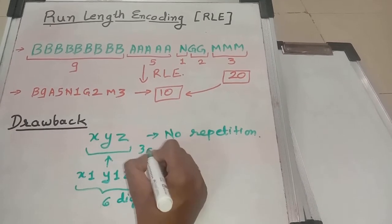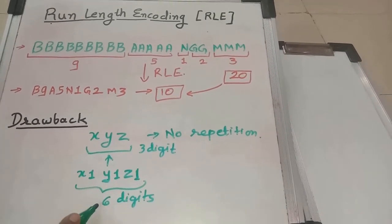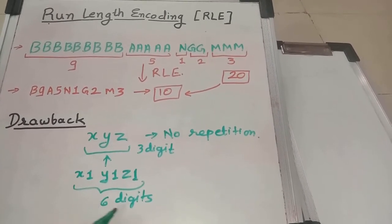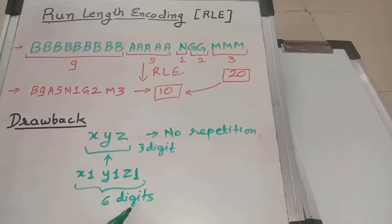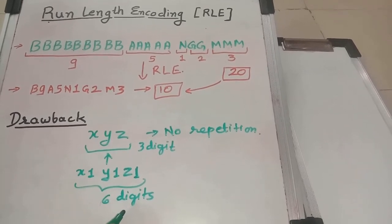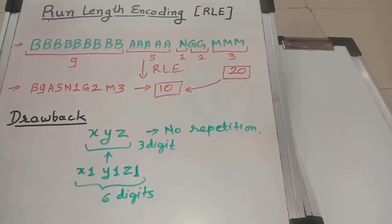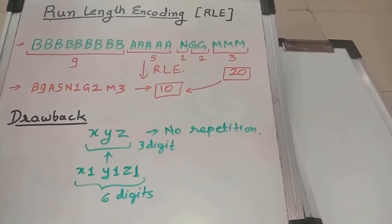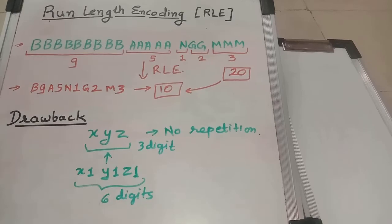So the number of digits are increased. Here it was 3 digits and now after encoding it is increased to 6 digits, which is greater than the original output. That is the drawback of RLE encode. Thank you students.